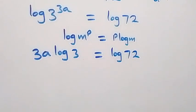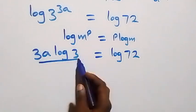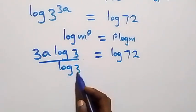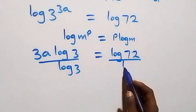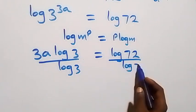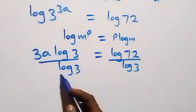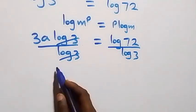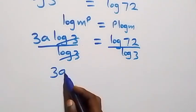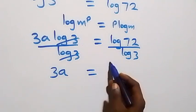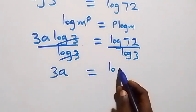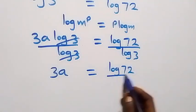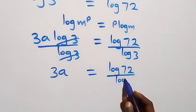Here we divide both sides by log 3. Log 3 cancels each other and we have 3a left, which is equal to log 72 over log 3.